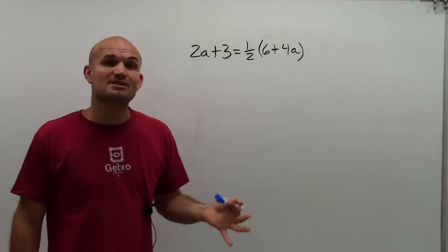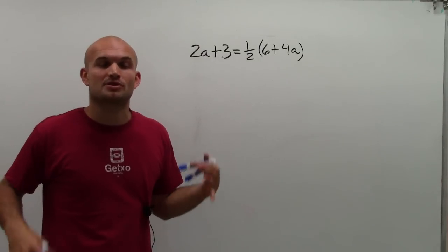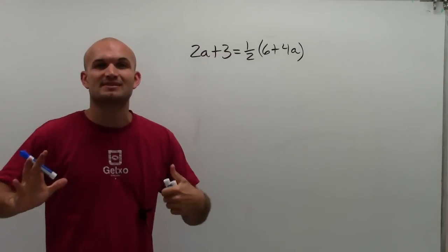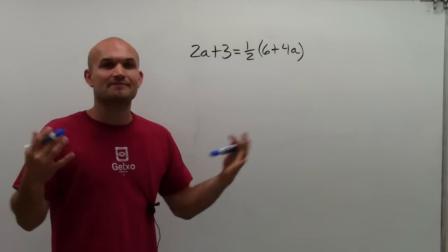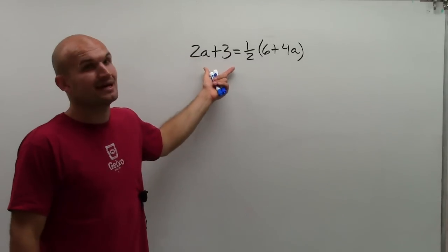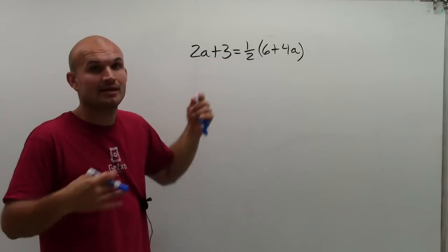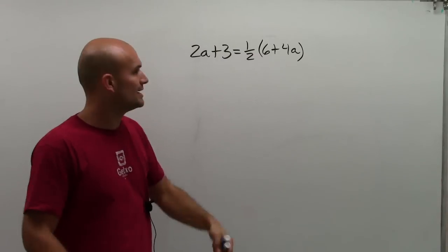Well, the main important thing when we have variables on both sides, it's a multi-step problem. So the first thing we want to do is simplify the left and the right side. I look on my left side and there's nothing I can do to simplify it. 2a plus 3 are unlike terms. I can't combine them.